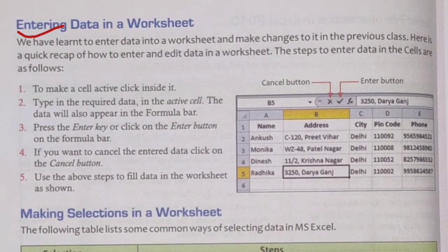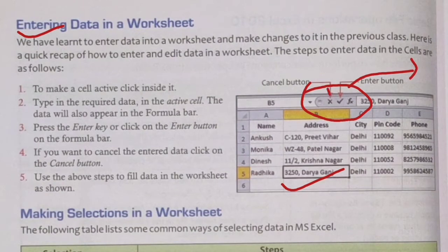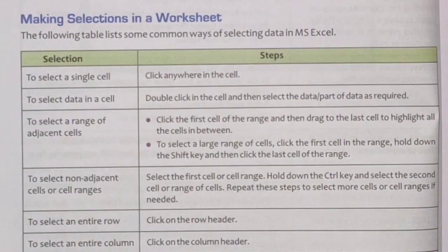In this way we can put our data into the worksheet. We can see in the image the active cell, the formula bar, the Enter button, and the Cancel button. The next heading is making selections in a worksheet.